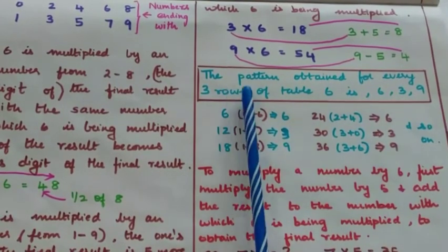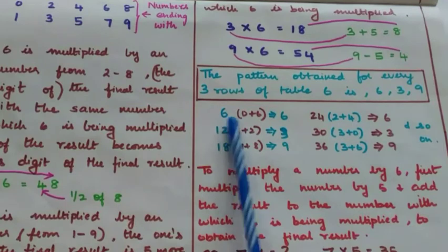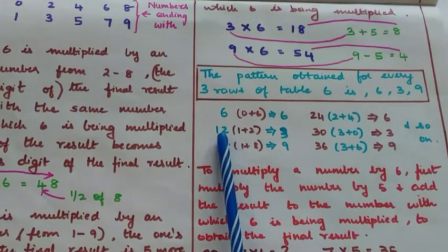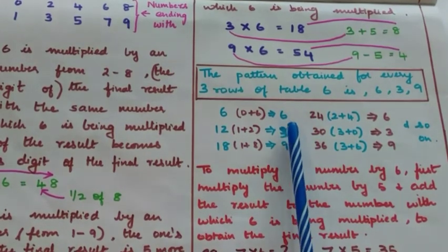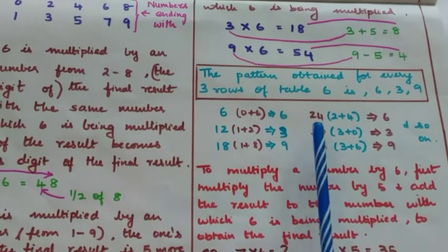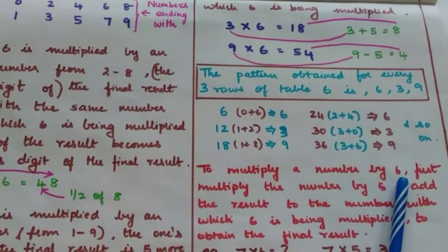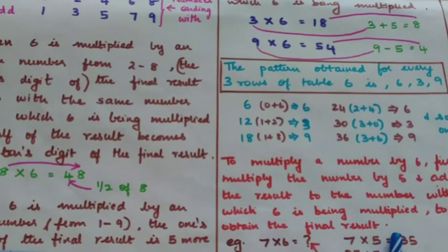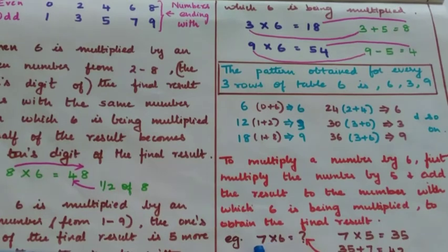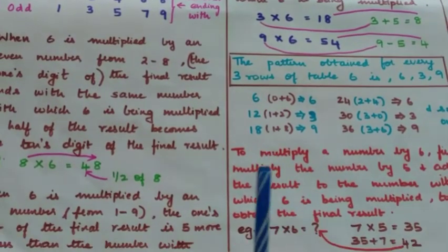The pattern obtained for every 3 rows of table 6 is 6, 3, 9. The first result is 6; for 12, add the digits to get 3; for 18, add 1 and 8 to get 9. This gives the pattern 6, 3, 9. For the next 3 rows: 2+4 is 6, 3+0 is 3, 3+6 is 9 — the pattern repeats throughout table 6. Another trick: to multiply any number by 6, multiply it by 5 first and then add the number itself. For example, 7 into 6 — multiply 7 by 5 to get 35, then add 7 to get 42.